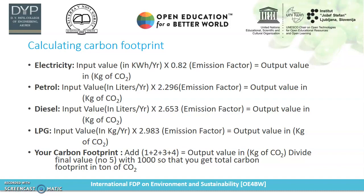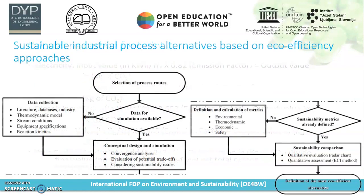Here I discussed a number of formulae which have been used to calculate carbon footprinting — using energy sources such as petrol, diesel, and LPG as energy inputs. This is a sustainable industrial process alternative based on an eco-efficiency approach, meaning if an industry wants to pursue a certain industrial process, that process must be considered for production or process purposes in a way that is eco-efficient.